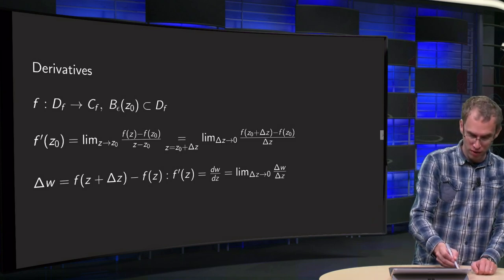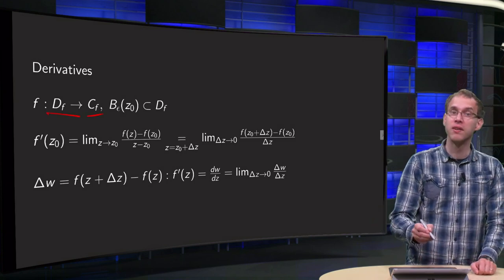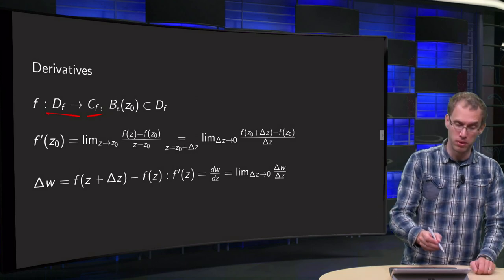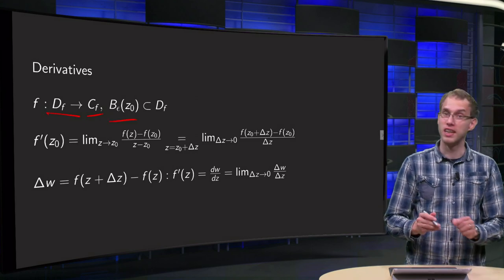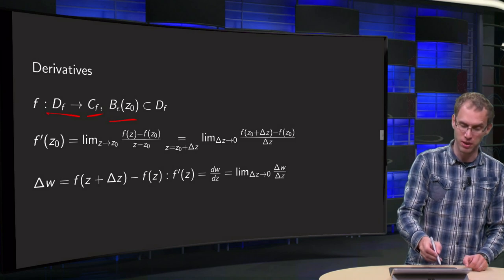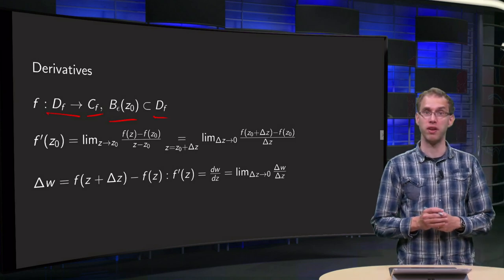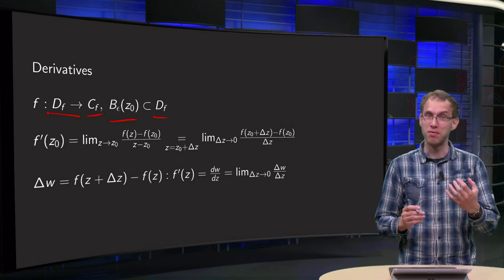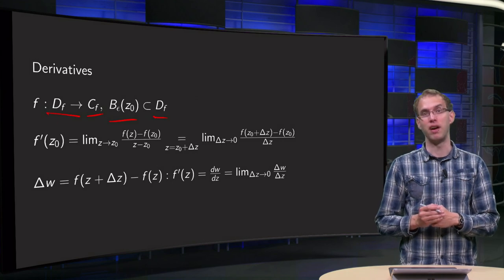Suppose we have function f from domain to co-domain. We need some small ball with radius epsilon and center z0 contained in the domain of f. And then we can define the derivative of f at z0.